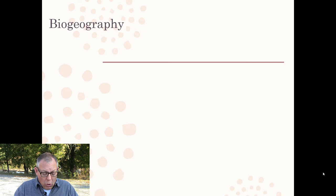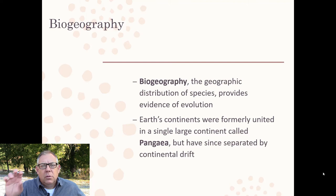Another source of evidence that Darwin pointed out is biogeography — the distribution of living things around the earth and the patterns we see in that distribution. If we look at the geographic distribution of species and the patterns, the best scientific way to explain those patterns is through evolution from earlier ancestors.